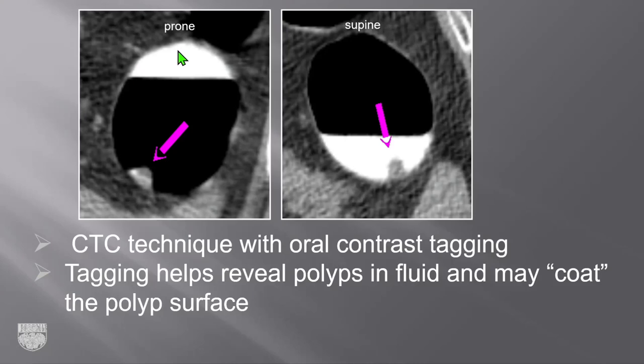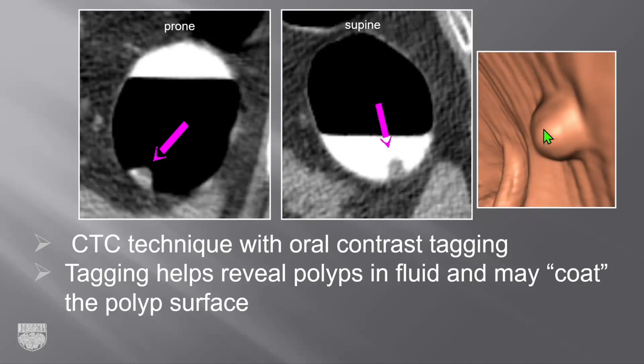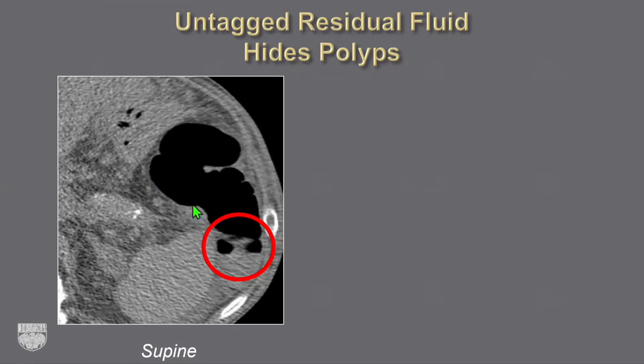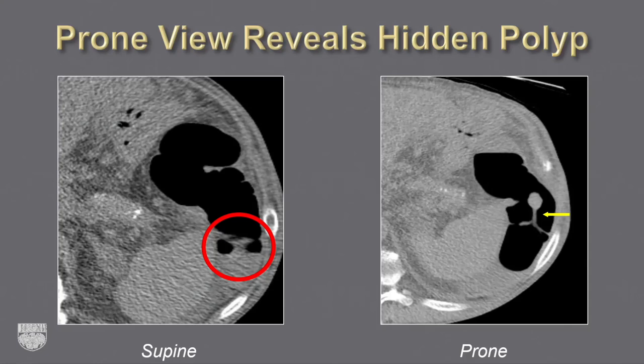Here's an example of supine and prone scans with fluid that is tagged — there is a polyp. The contrast tagging allows you to see the polyp and the subtraction software shows it well in 3D. Tagging on the polyp surface also helps detect lesions. With untagged fluid, a fairly large lesion is completely hidden on the supine view; the 3D view doesn't help. On the prone view, the pedunculated polyp becomes visible because it's no longer hidden by untagged fluid.